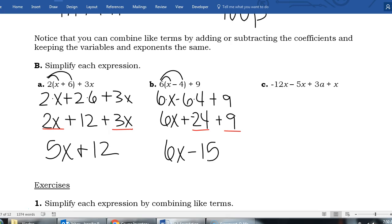My last one does not have any distributing, but I still have multiple like terms. I have a negative 12x. I have a negative 5x. Remember, that's the same as plus negative 5x. And I have a positive invisible 1x. So if I combine all of my like terms there, I'm doing negative 12 and negative 5. That's negative 17. With positive 1, that would be negative 16. And then the 3a has no like terms. So that stays as its own separate piece.